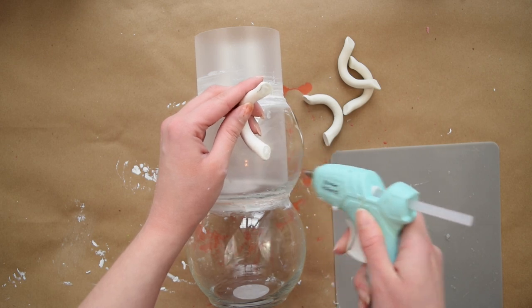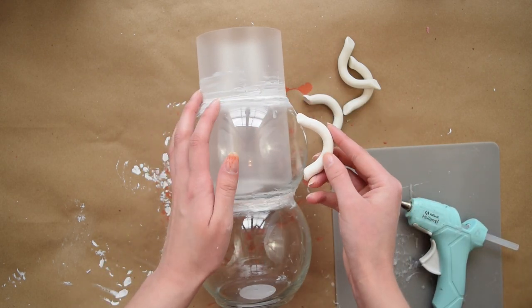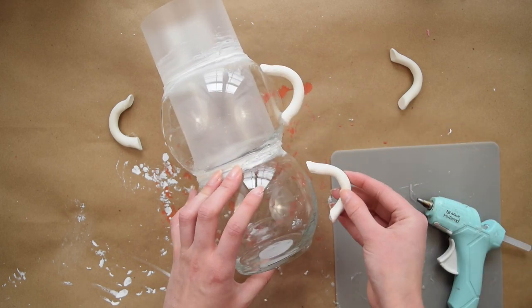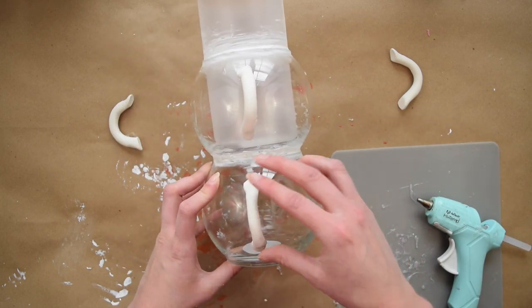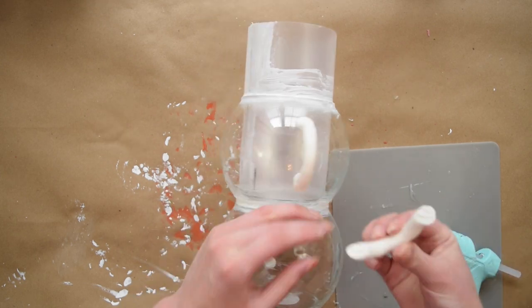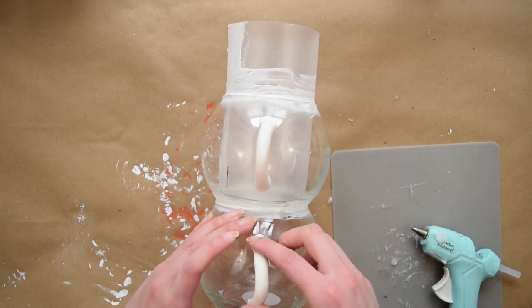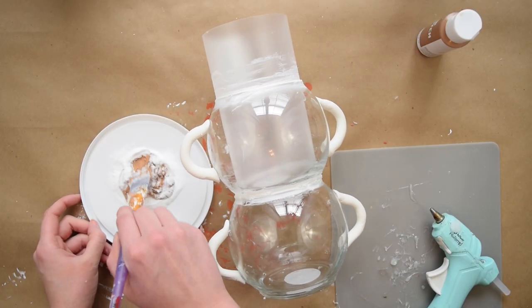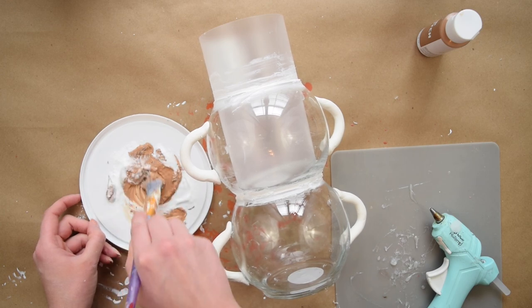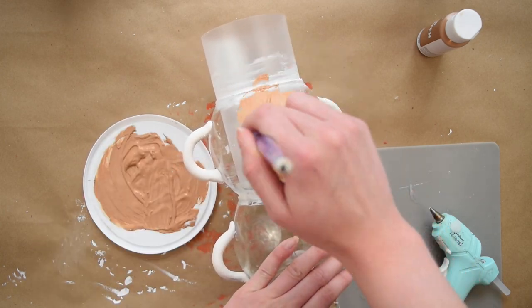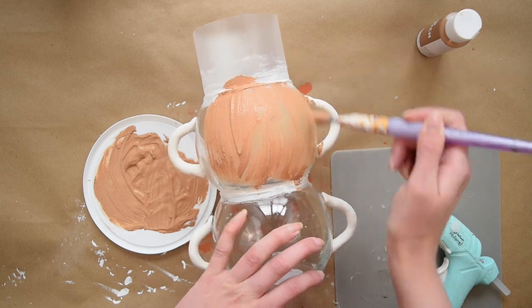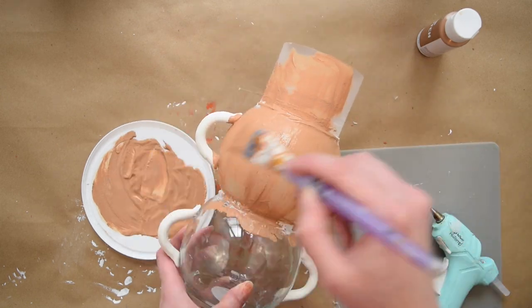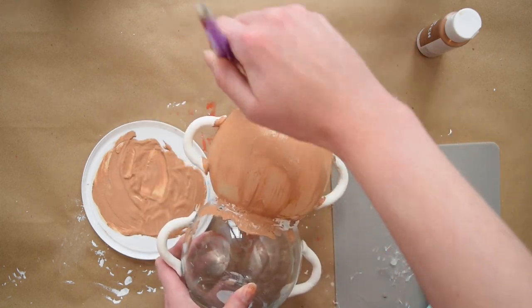Once those handles were done I used some more hot glue to attach them to the sides of the vase and I used Gorilla hot glue throughout this entire project because it has a super strong bond. With the handles on I'm using this matte tan paint and I am mixing it with some baking soda because I just figured that could kind of hide some of the imperfections from the caulking and because I layered together a bunch of different elements to make this vase it was just the perfect paint technique.